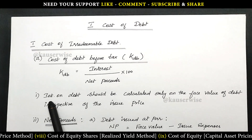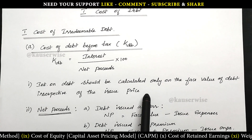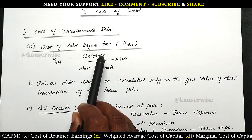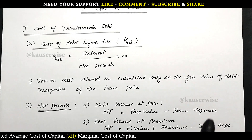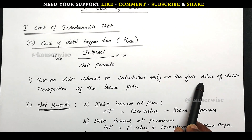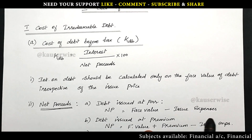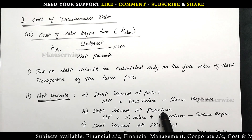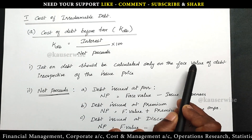How to calculate interest? Interest on debt should be calculated only on the face value of debt, irrespective of the issue price. Whether the debenture is issued at par, at premium, or at discount doesn't matter — interest will be calculated based on the face value. Suppose the debenture face value is 100 rupees and the debenture interest rate is 7 percent — you will get 7 percent on 100 rupees regardless of whether it's issued at par, premium, or discount. This is a very important point.